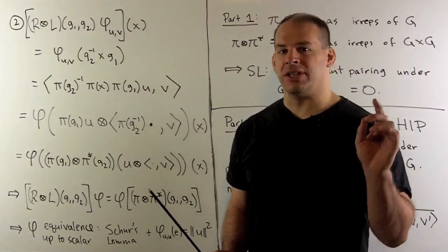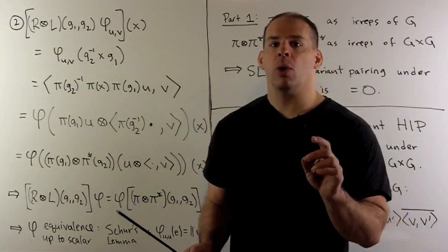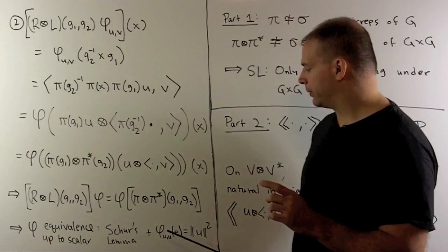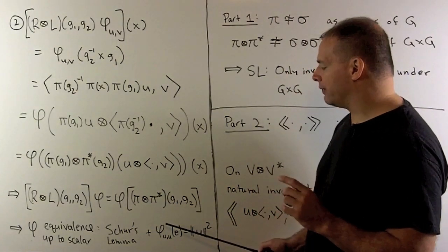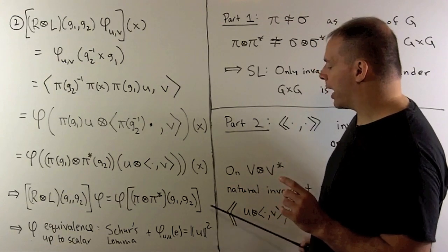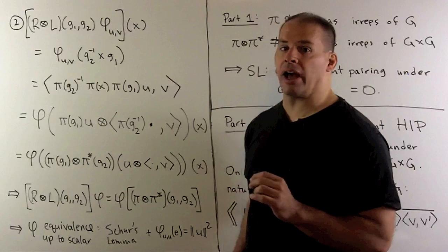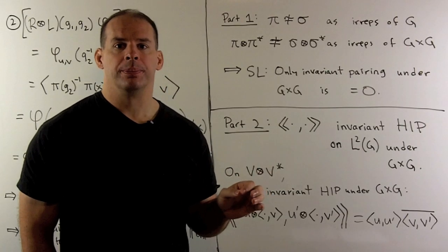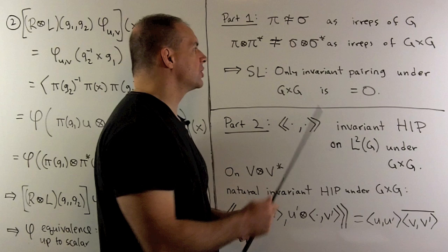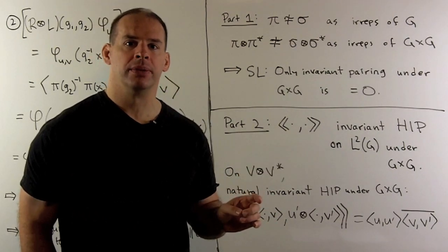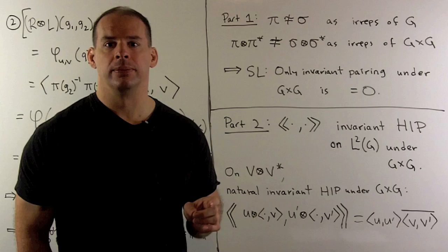Our domain space is an irreducible representation of G×G, so Schur's Lemma applies — meaning phi is either zero or an equivalence up to a scalar with the image. It's non-zero because for any non-zero u, the matrix coefficient of u with u evaluated at the identity equals the norm of u squared, which is non-zero. So we have equivalence up to a scalar. For the vanishing result: if pi and sigma are inequivalent irreducible representations of G, the corresponding tensor products are inequivalent as irreducible representations of G×G, and Schur's Lemma says the only invariant sesquilinear pairing is the zero pairing.